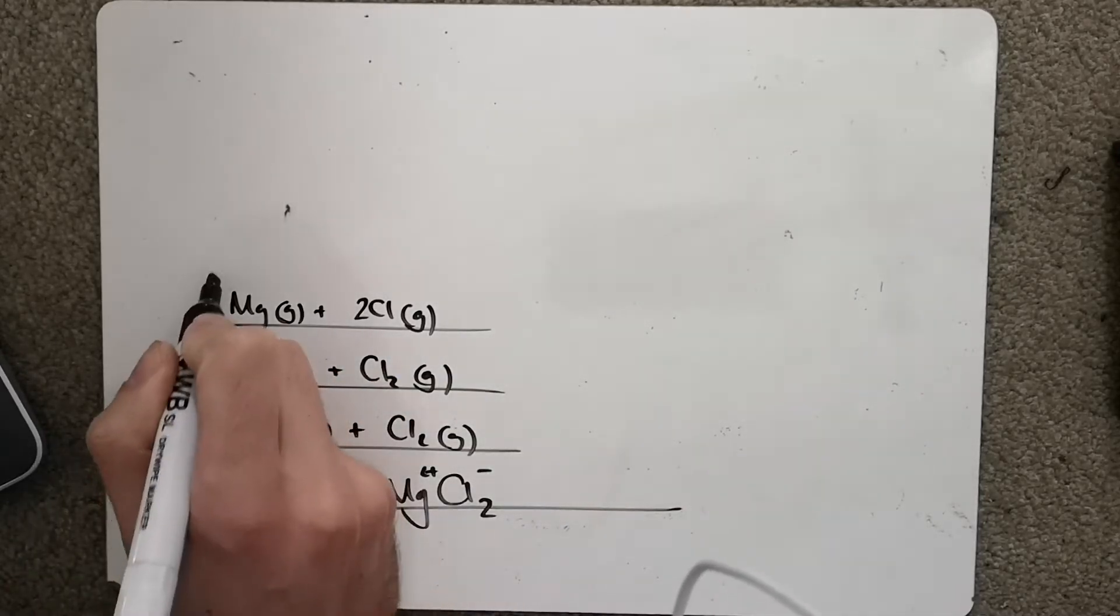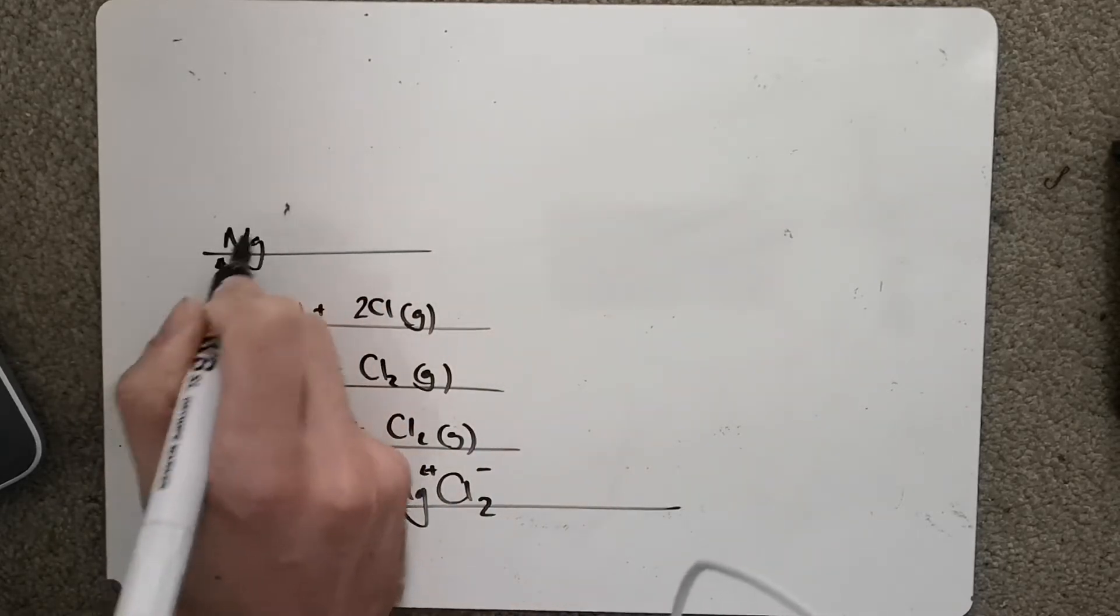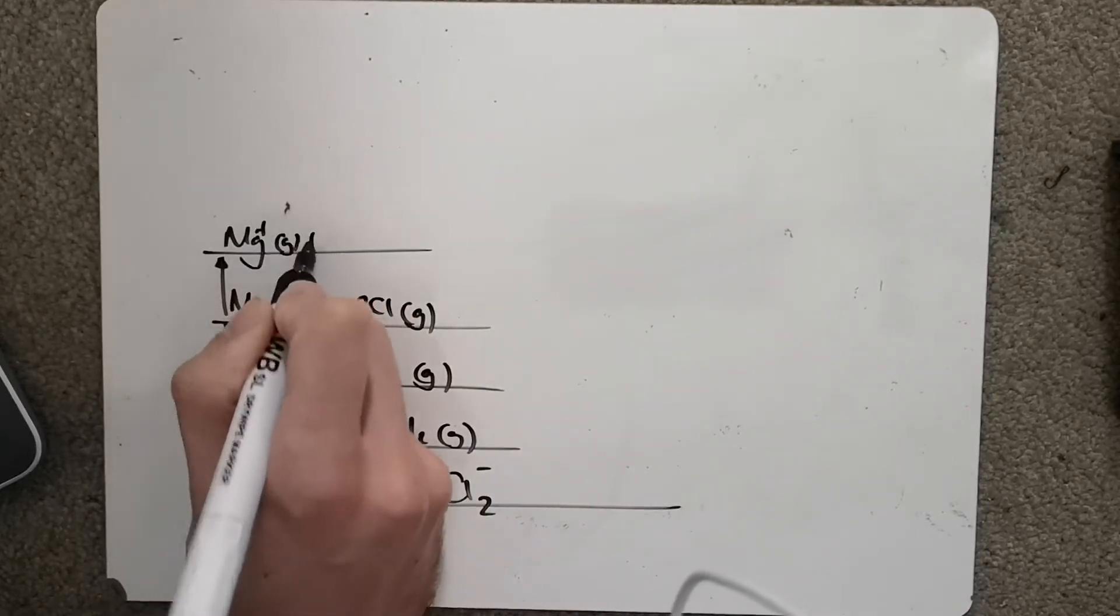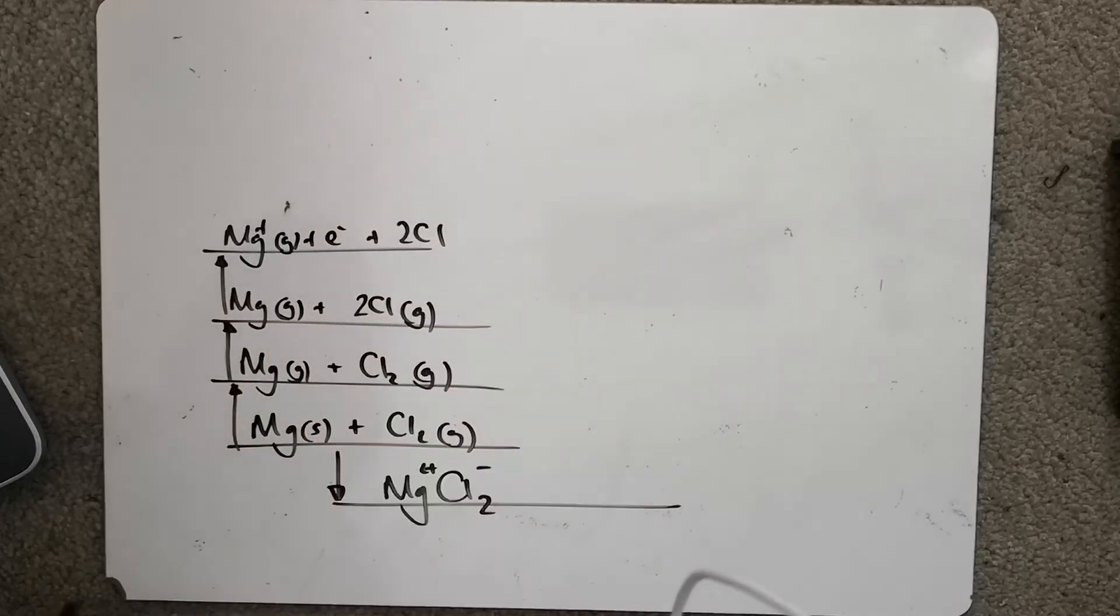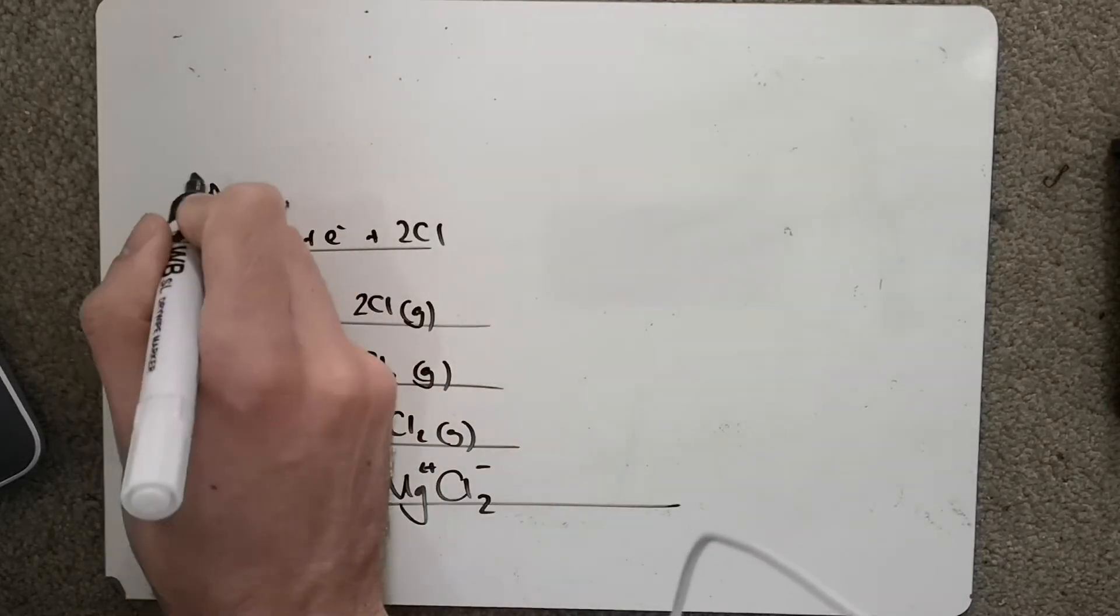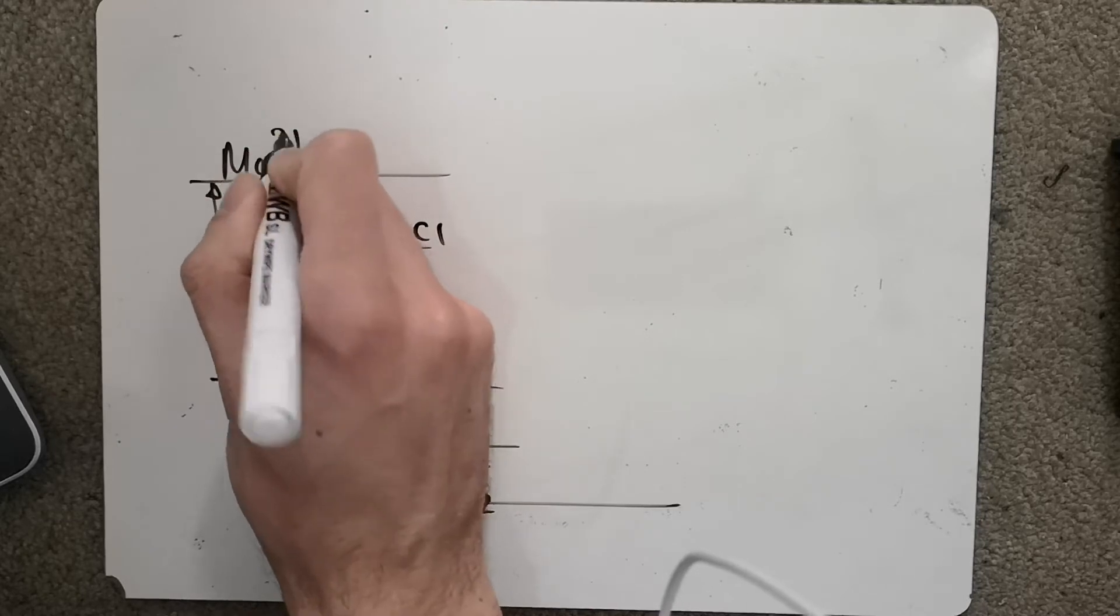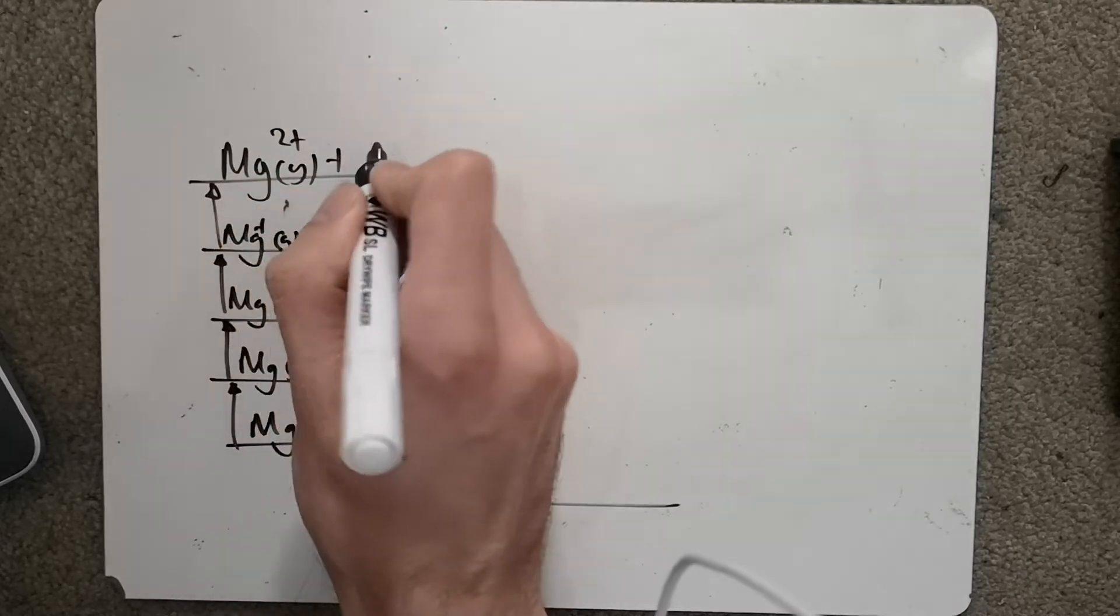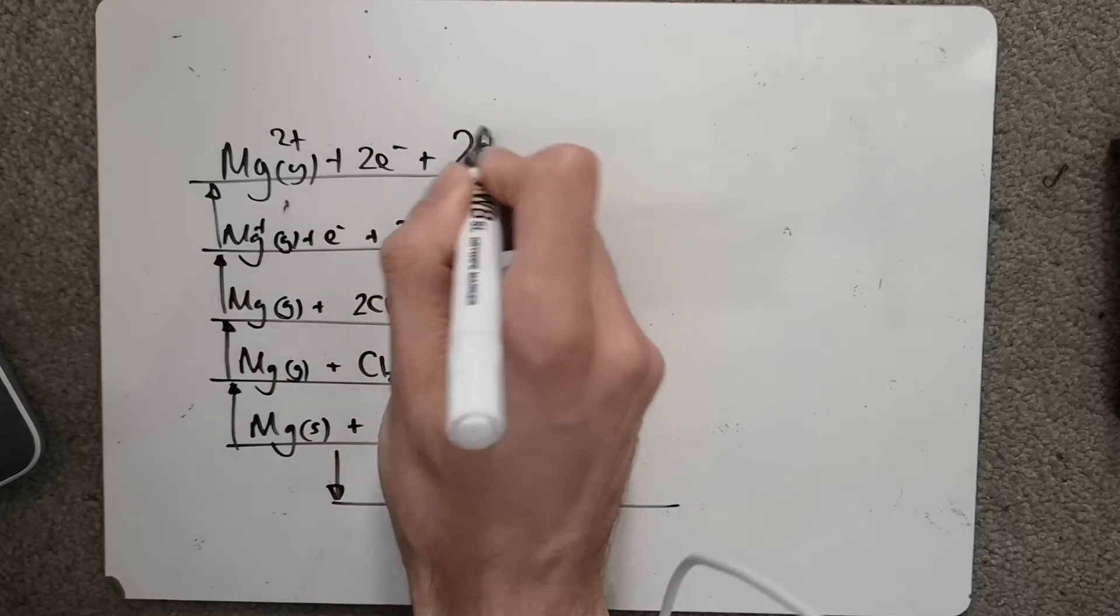Then we've got our first ionisation energy of magnesium: Mg+ gaseous plus an electron plus 2Cl. Then we've got our second ionisation energy of magnesium: Mg2+ gaseous plus 2e- plus 2Cl.